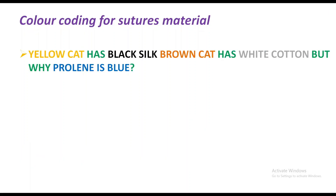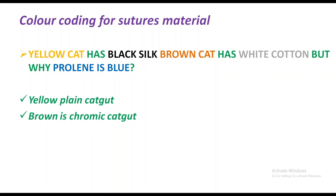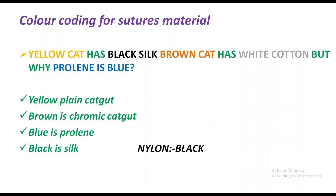The mnemonic is: yellow catgut has black silk, brown catgut has white cotton, but white prolene is blue. So yellow is plain catgut, brown is chromic catgut, blue is prolene, black is silk, violet is vicryl, and cotton is white.